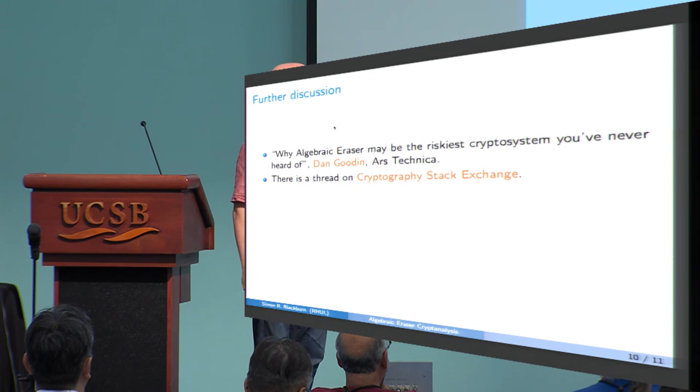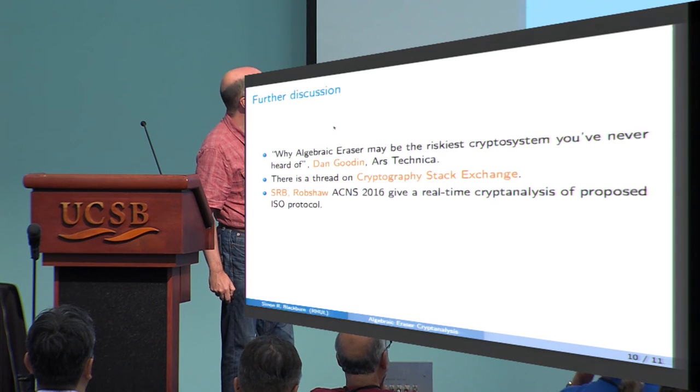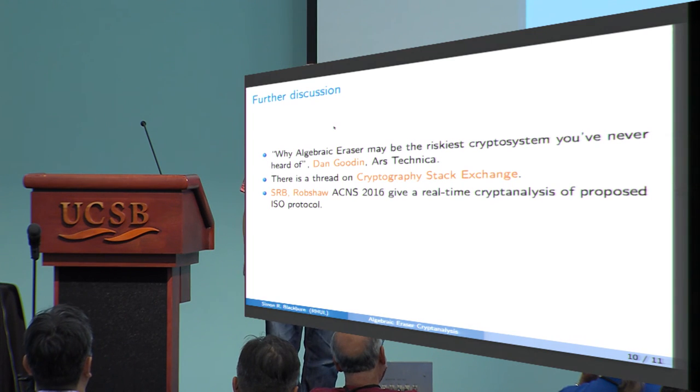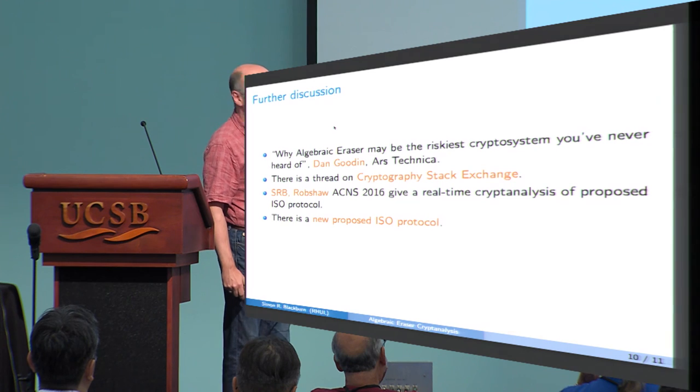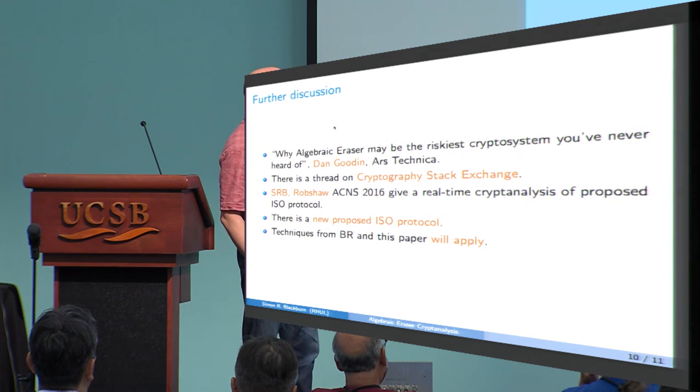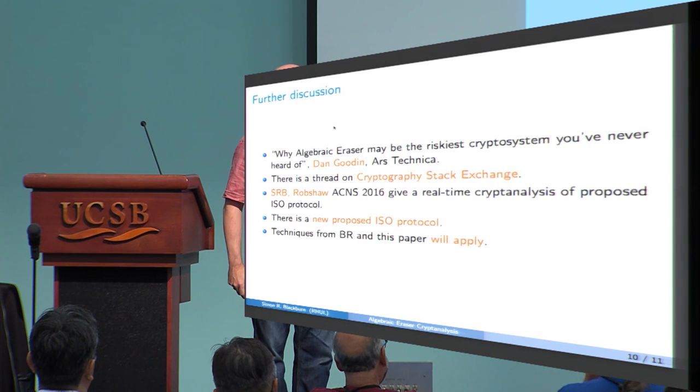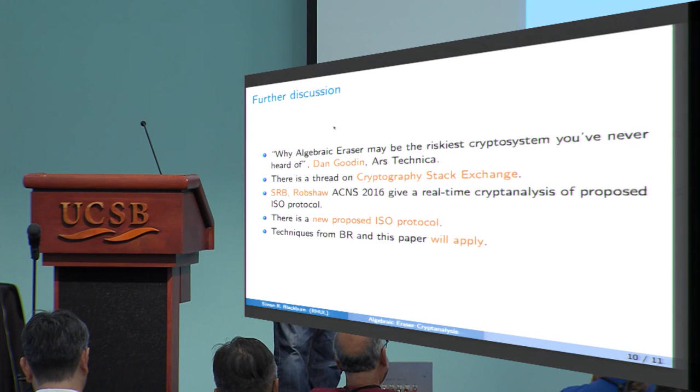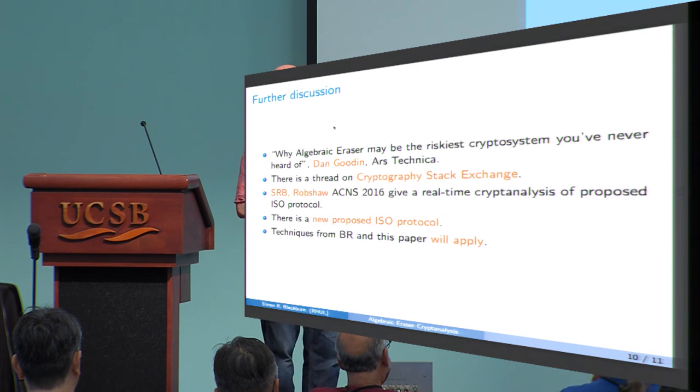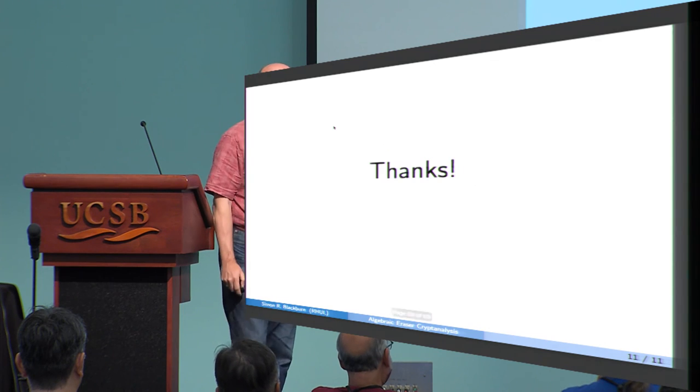There's also, I think, a very nice thread on cryptography stack exchange, which talks about this. I should say that Matt Robshaw and myself have got a paper in ACNS just earlier this year, which gives a real-time cryptanalysis to the proposed ISO protocol. So it's faster. There is a new proposed ISO protocol after this, where they've added some hash. But my worry is that the techniques from this paper, with Matt, and the paper presented here, a combination of them will apply to this new proposal. So my worry is that, I mean, certainly I think it would be surprising that they're proposing an ISO protocol standard at such an early stage. I don't see anything from the standard saying why this protocol is resistant to these kind of techniques. I find it very surprising that they've done this. Worrying, I think. It certainly worries me. So thank you very much.